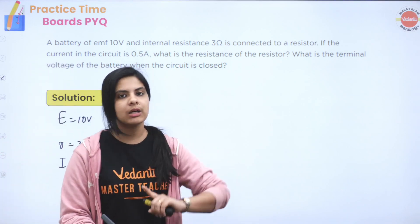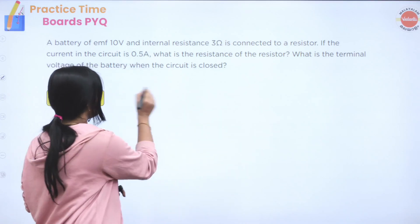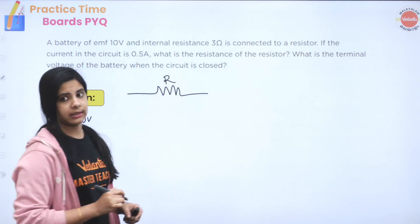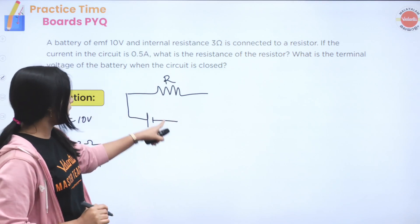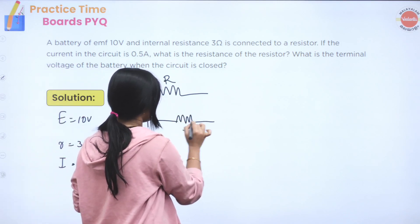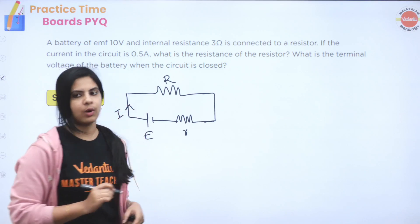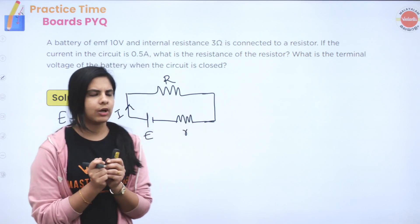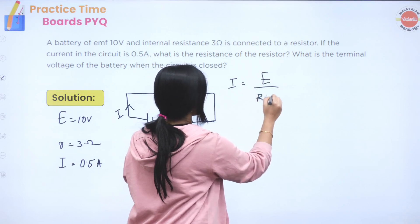In the first part, we solve for resistance. We draw the circuit diagram with resistance R, the battery, and the internal resistance r. The formula is I = E / (R + r), where E is the EMF, R is the external resistance, and r is the internal resistance.